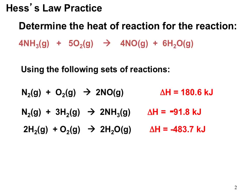Let's look at the next example: determine the heat of reaction for the reaction where 4 moles of NH3 gas plus 5 moles of O2 gas gives 4 moles of NO gas and 6 moles of H2O gas. They've given a set of three reactions with three delta H values that I need to utilize in order to get the overall equation. I need these equations to sum to this target equation in order to get the delta H of reaction for this specific example.